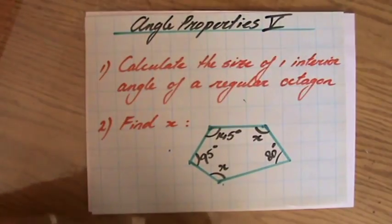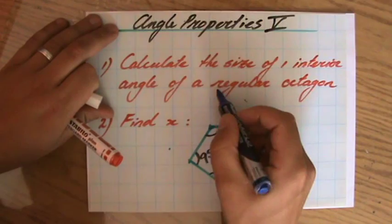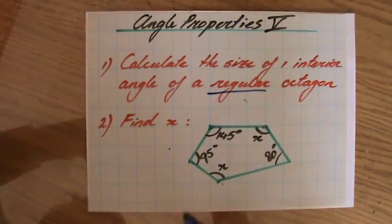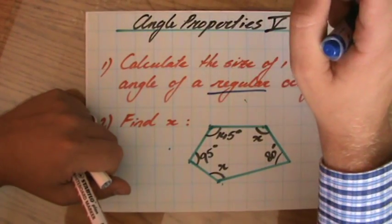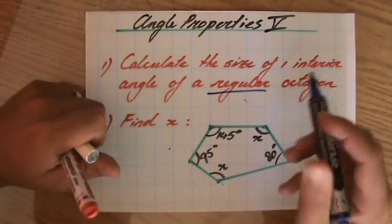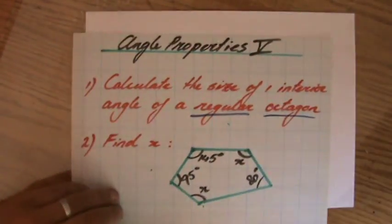Now, what is important? This word is important: regular. Because a regular polygon means all sides are the same, but also all angles are equal in size. A regular octagon.